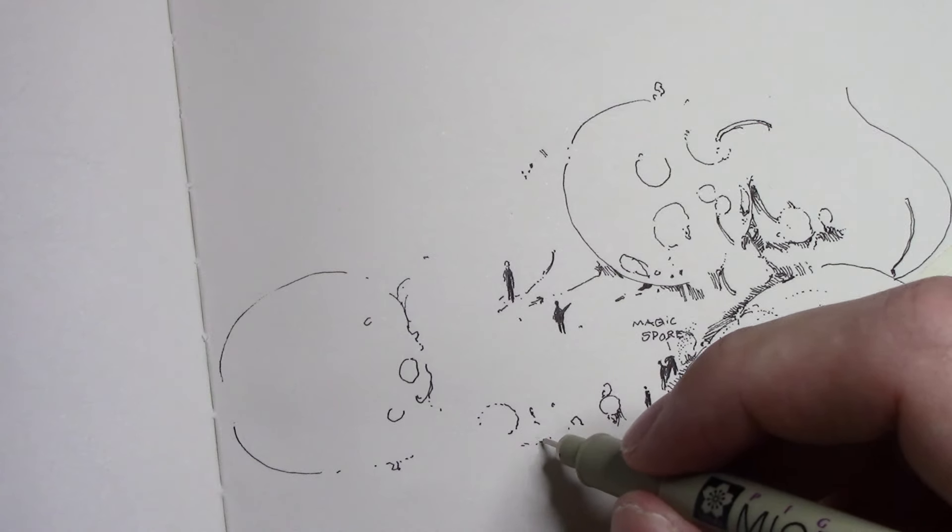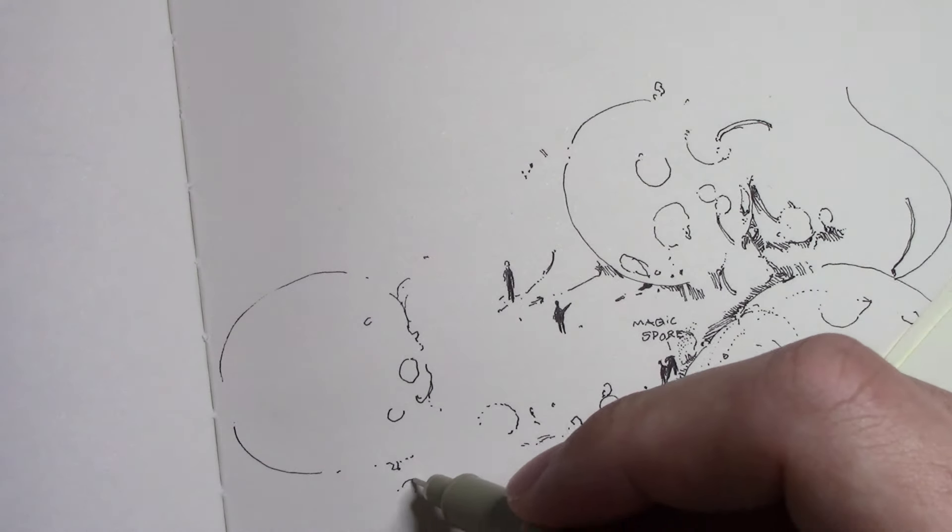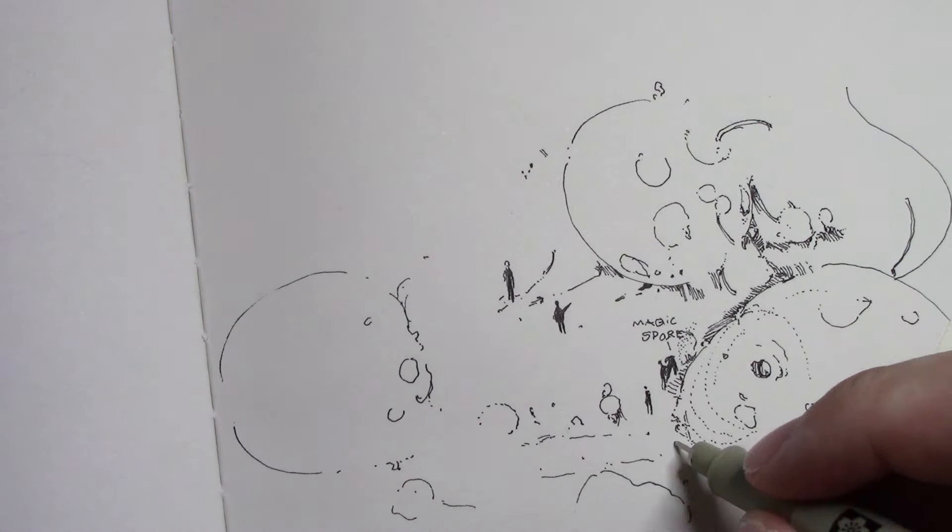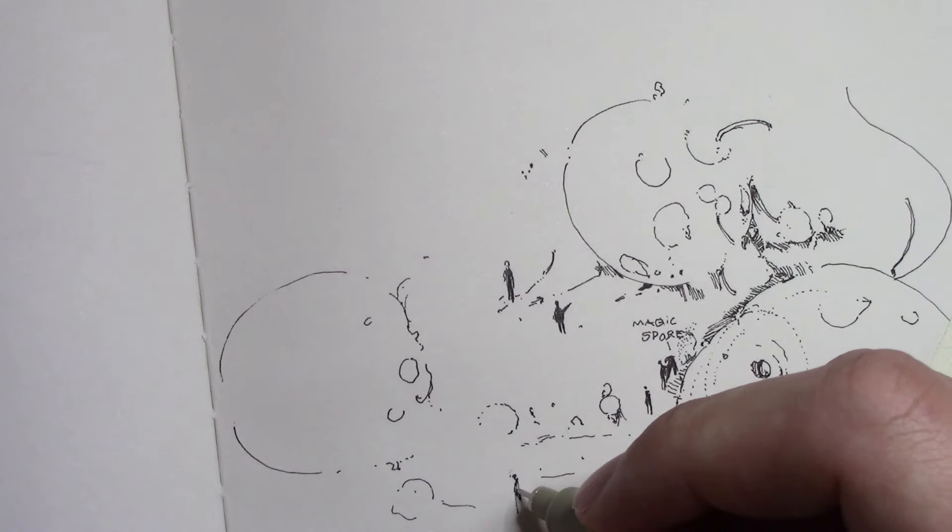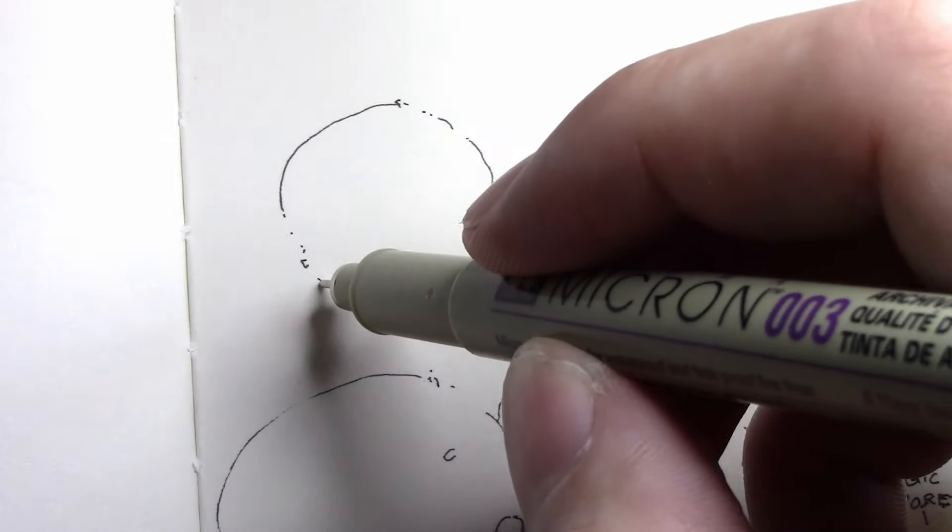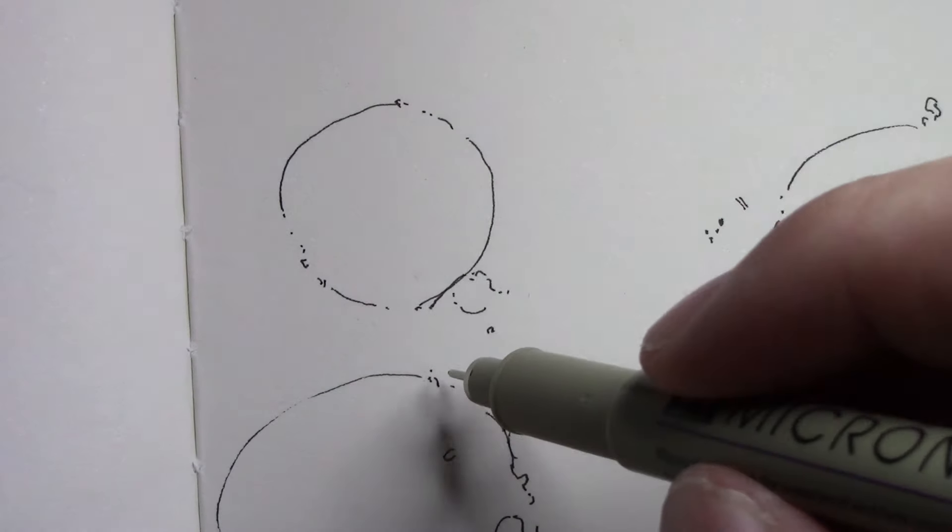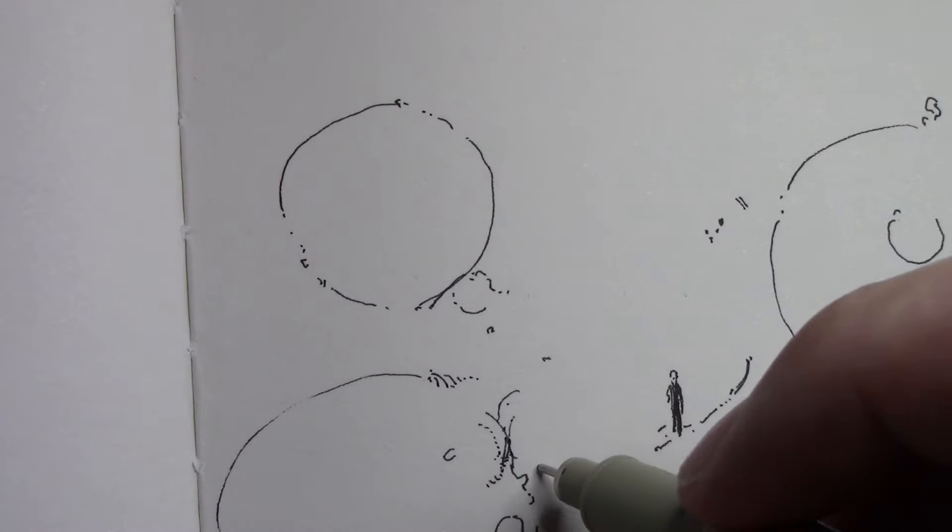It looks detailed, but at the same time, it's not super detailed. There's some stippling and dots, a little bit of shading, cross-hatching and everything. I like drawing the little people. They're fun.